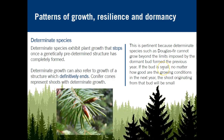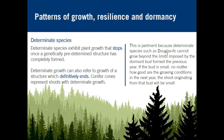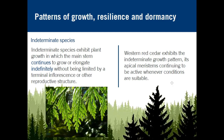For determinate species — such as Douglas fir, pine, spruce, and true firs — their growth is predetermined by the bud produced in the summer and fall. They have a definitive end, so conifers like Douglas fir cannot grow beyond the limits imposed by the dormant bud from the previous year. If a very small bud forms and goes dormant through the winter, no matter how good the growing conditions are the following year, the shoot from that bud will be small. In indeterminate species like western red cedar, growth can continue to elongate indefinitely, not constrained by that bud.